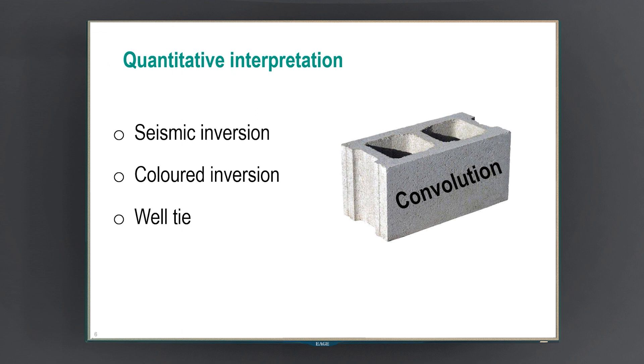So in summary, well tie and inversion, which are the fundamental building blocks of quantitative interpretation workflows, they all use convolution in one form or the other. Convolution is the building block for various applications in quantitative interpretation workflows, such as seismic inversion, colored inversion, and well tie. 1D convolution expresses the vertical resolution correctly.